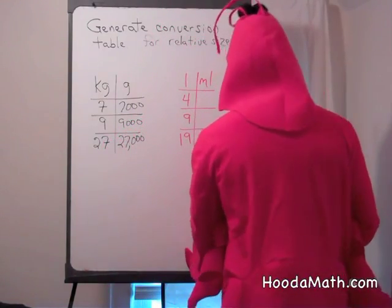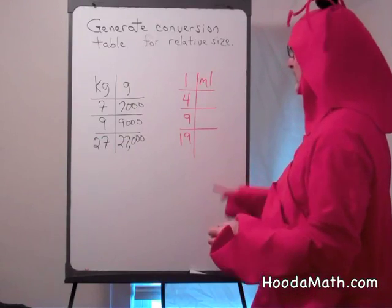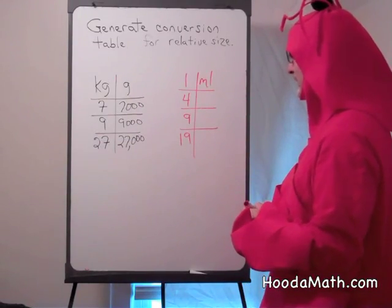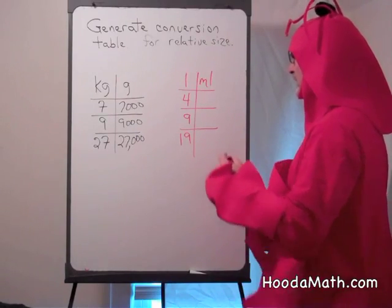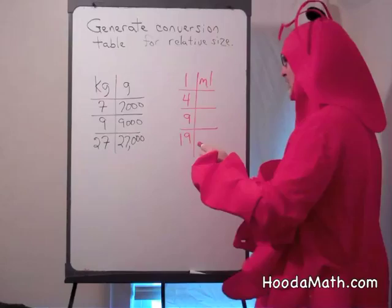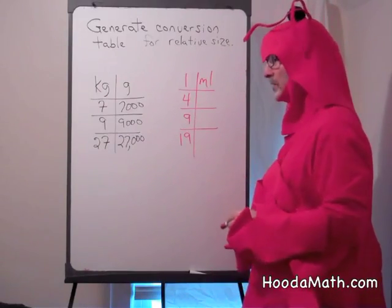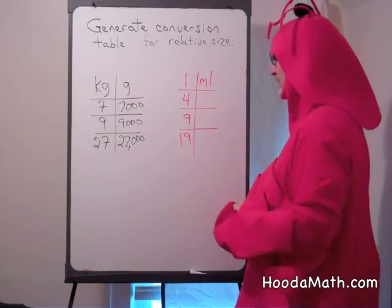Now this is a measure of volume. Liters and milliliters. A liter, if you had, this is parts of a liter. There's 1,000 milliliters in one liter.